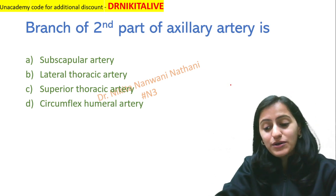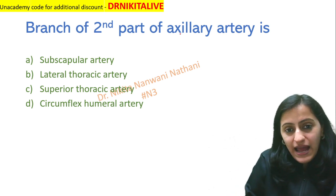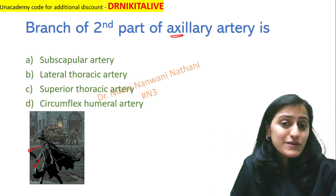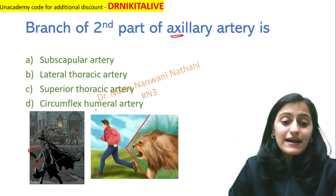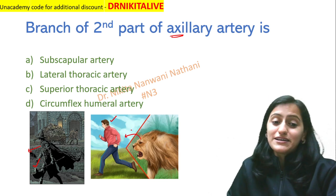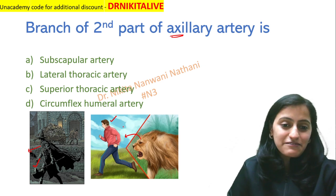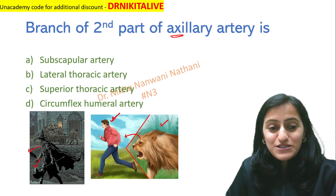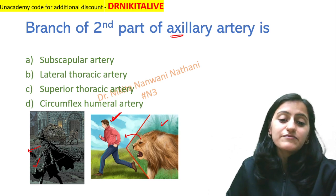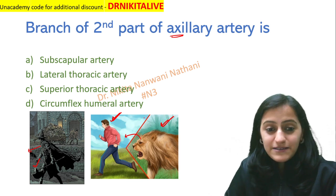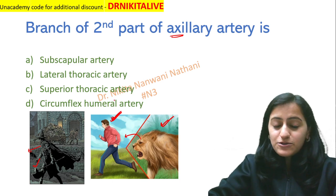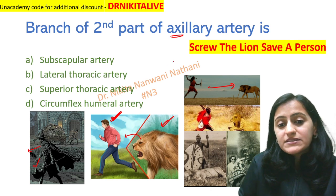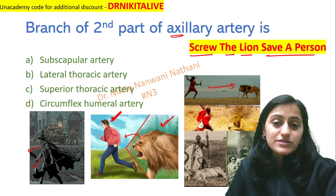Imagine you are going hunting in a forest carrying an axe — the axe represents the axillary artery. When the hunter reaches the forest, he sees a lion running behind a person. The hunter's first instinct is not to hunt the lion but to save the person. So the hunter says, 'Screw the lion, I'm more inclined towards saving the person.' The hunter kills the lion and saves the person. So the mnemonic is: 'Screw the lion, save a person.'